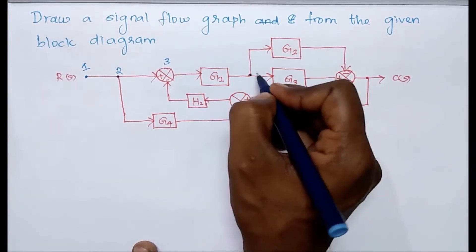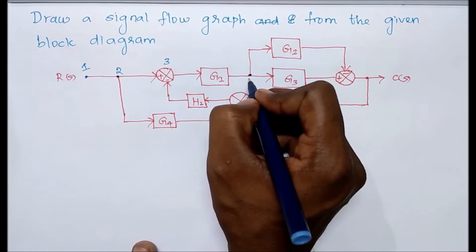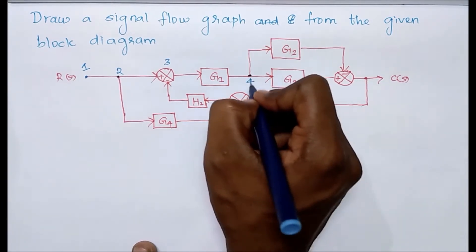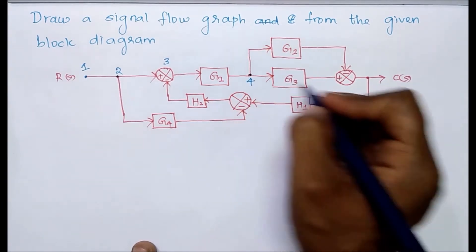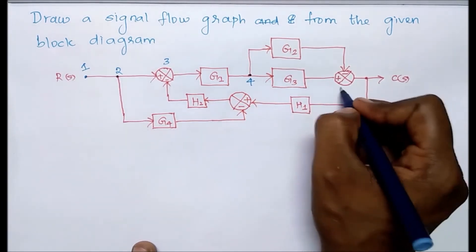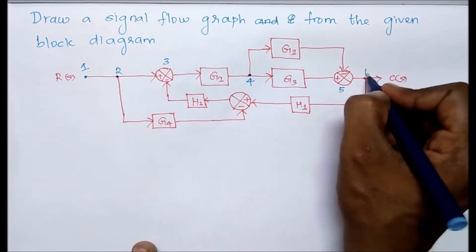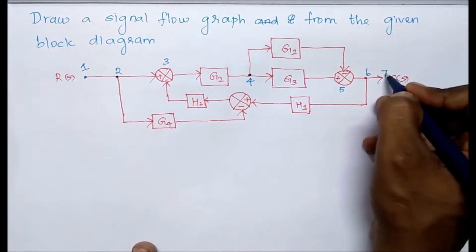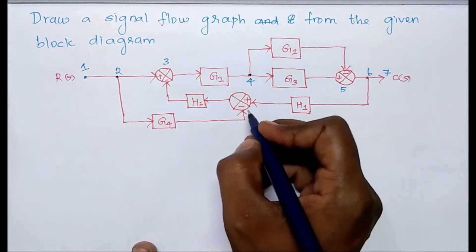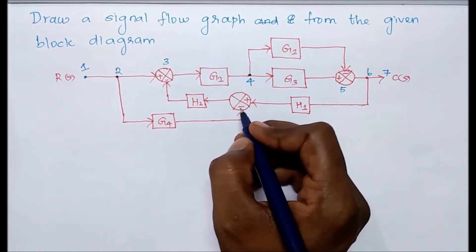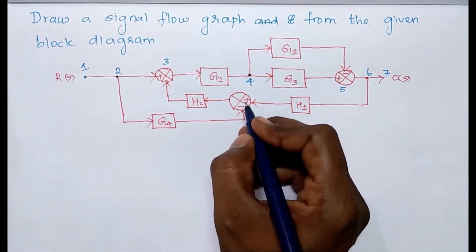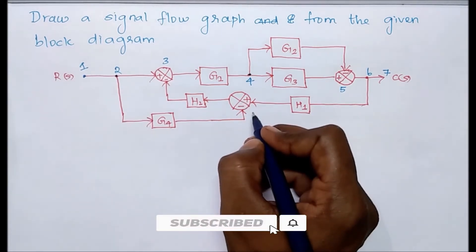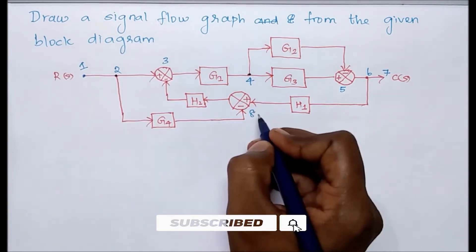At this point also, more than two branches are connecting, so we consider it as node four. Similarly, we consider the next point as node five, and the following as node six. The output is node seven. Here also more than two branches are coming, so we consider this as node eight.